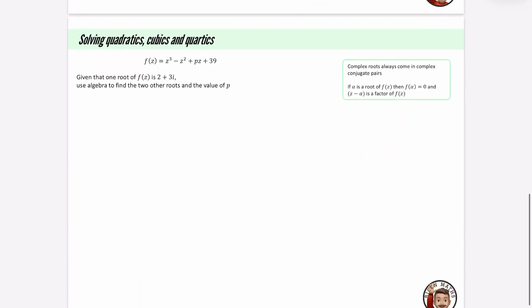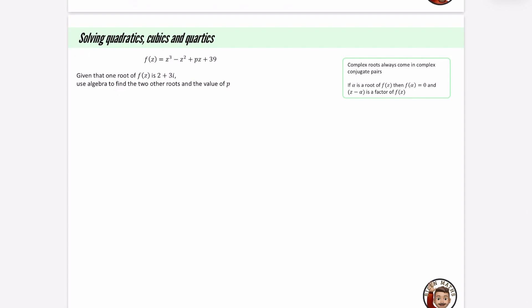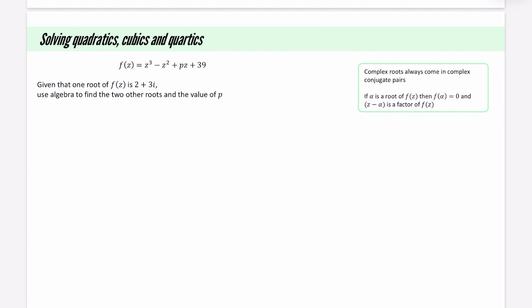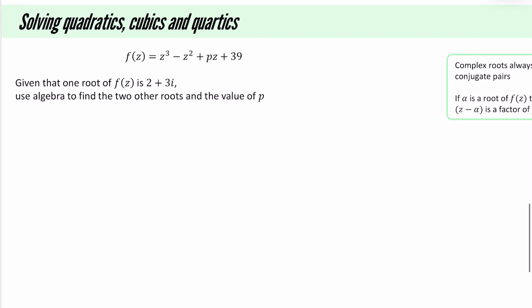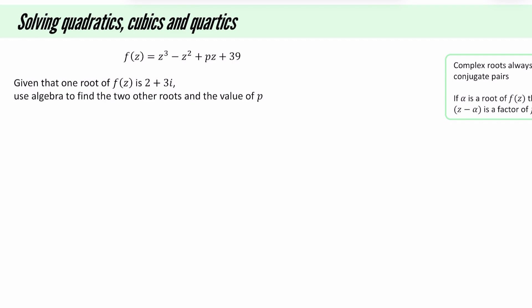Last thing that I think we would look at from chapter 1 is this, which is our solving quadratics, cubics, and quartics. There's lots and lots of methods that you can do for this, and there's actually going to be even more once you've got to the roots of polynomials chapter. So complex roots always come in complex conjugate pairs. So if you get one complex root, you can very quickly work out what another root is guaranteed to be, because it will be its complex conjugate. And if we know that we have a root of a function, when you substitute that thing into the function, you get zero. And we also know that z minus that root is a factor of it. So we have this equation, f of z is z cubed minus z squared plus pz plus 39, and it tells us that one of the roots is 2 plus 3i. We're going to use algebra to find the two other roots and the value of p.